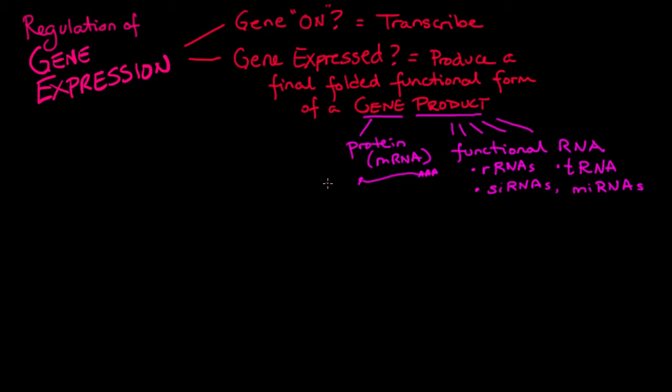So expressing a gene means producing a final, folded, functional gene product. And that happens at six different levels. There are six levels of gene expression regulation. And by controlling those, by controlling gene expression at six levels, you turn the genes on that you want just at the time that you want them.